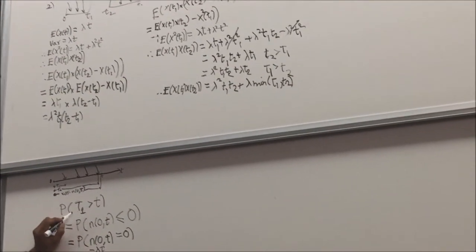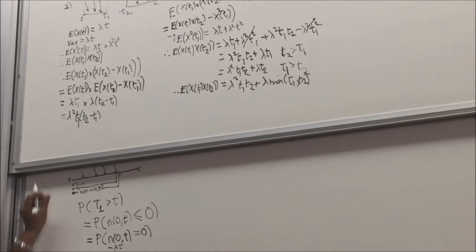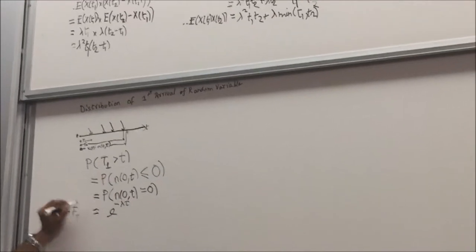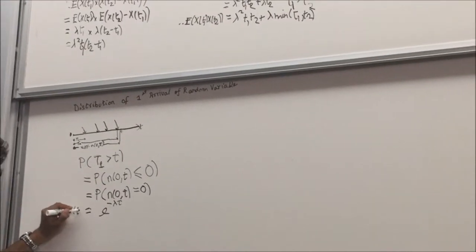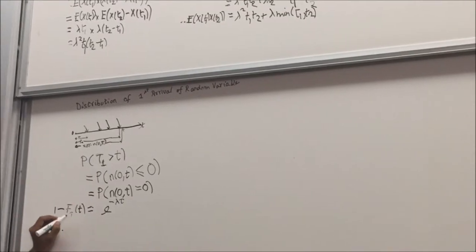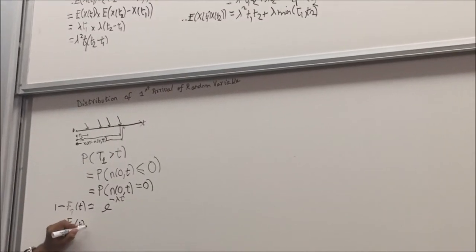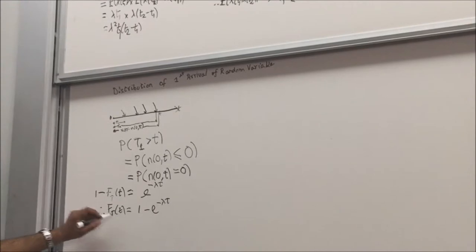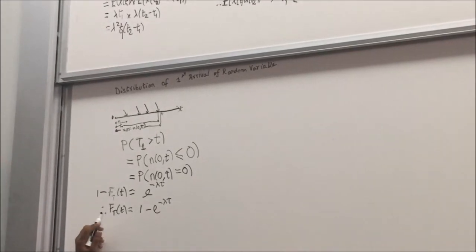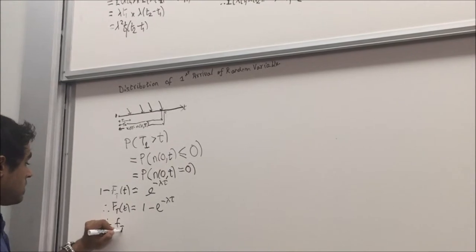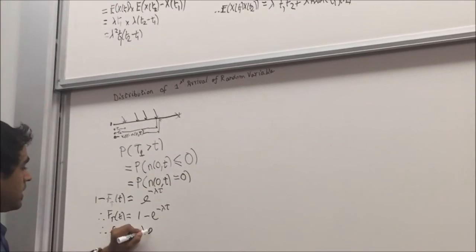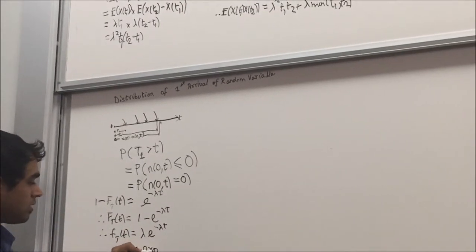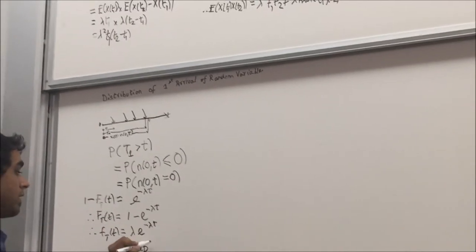This is equal to 1 minus the distribution function at the first time interval. So the distribution function at the first time interval will be 1 minus E raised to minus lambda T. Now if we differentiate this distribution function, we will get the density function, which will be equal to lambda E raised to minus lambda T, which is equal to the exponential function with parameter lambda.